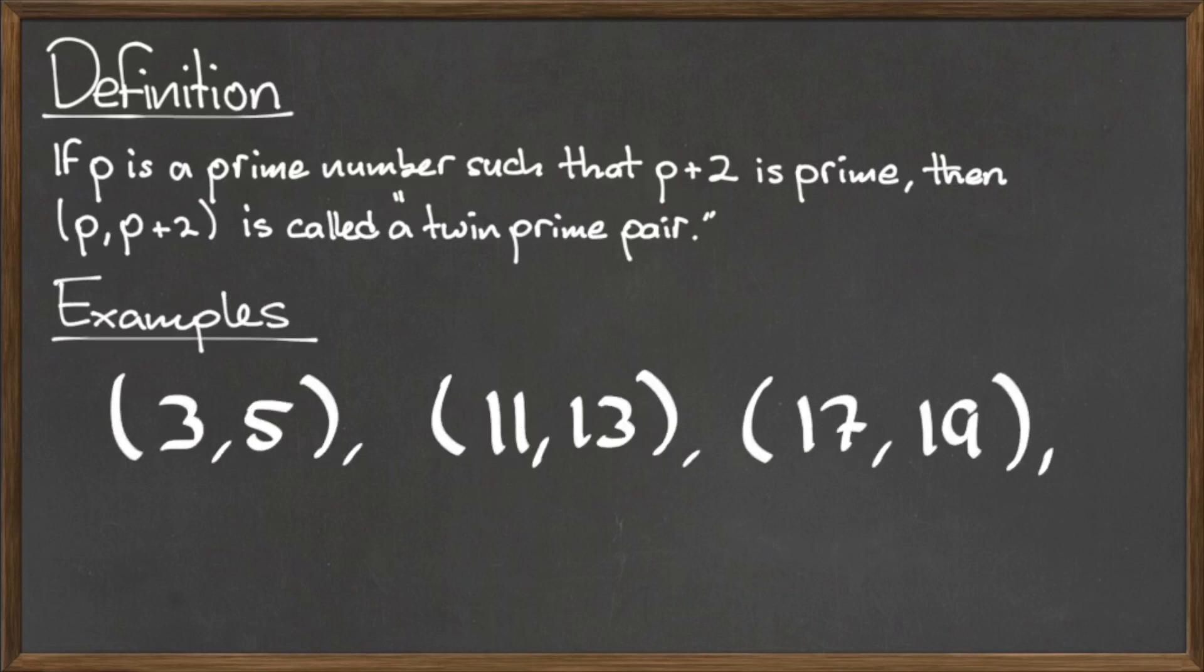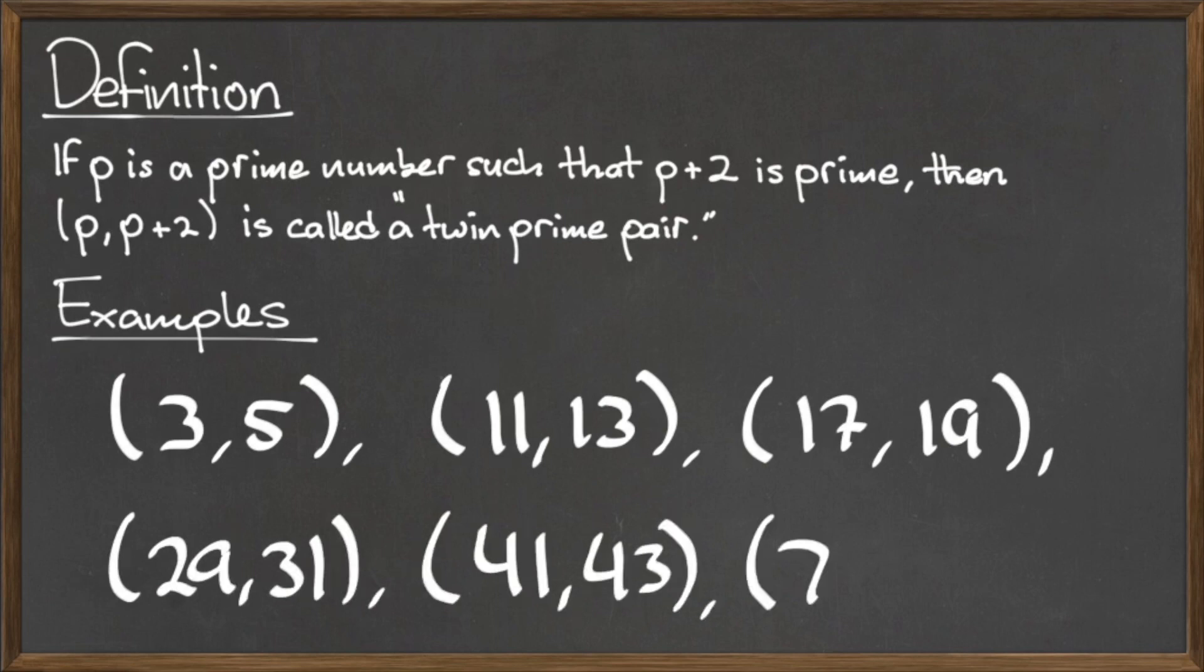are (3,5), (11,13), (17,19), (29,31), (41,43), and (71,73), and there are many others.